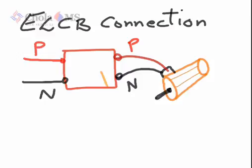The body of the motor to be protected is connected to the ELCB terminal B. The earth potential is taken as reference at terminal E.